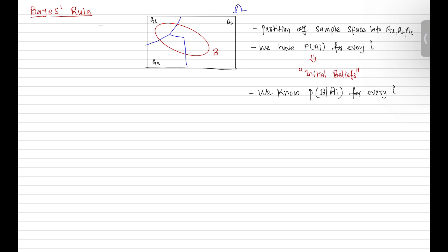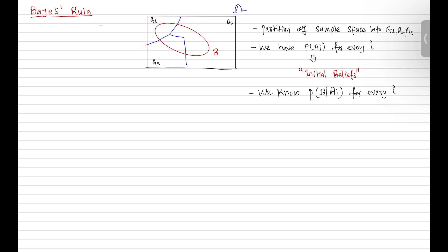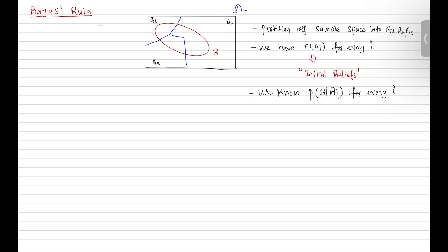When you started, your initial belief about the different scenarios was: what is the probability of event A1, what is the probability of event A2, and what is the probability of event A3. That was your initial belief. Now, given this new information, maybe we should revise our initial belief.